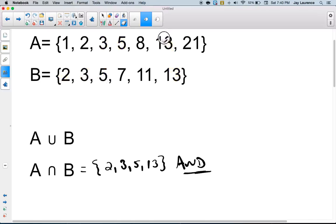so intersection is an AND. Unions are an OR. I want all the numbers that are in set A or in set B. So let me see here. I'm not going to list any member more than once. So 1 is in A. 2 is in both of them.